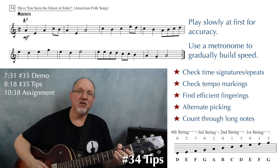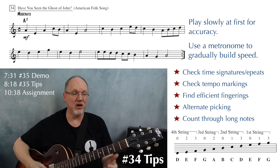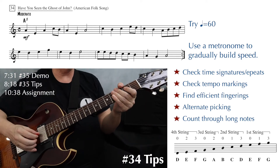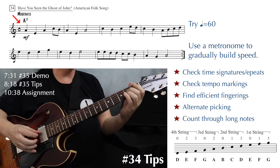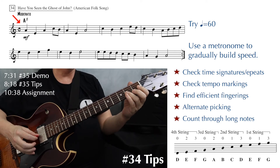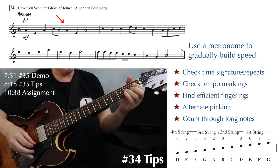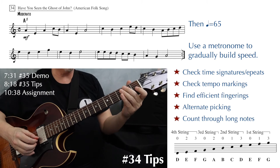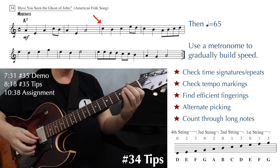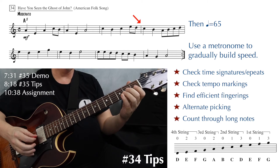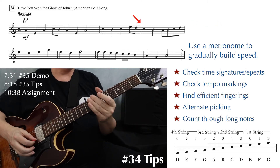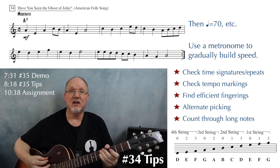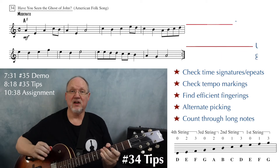If quarter equals 90 is a little fast at first, there's no rule that says you have to play at that speed right away. You could bring it down to, say, quarter equals 60 to really get it down. Once you're comfortable playing it at 60, boost it up a little bit to 65. Once you're comfortable at 65, keep boosting the tempo by five beats per minute at a time until you've reached the tempo you want to play.